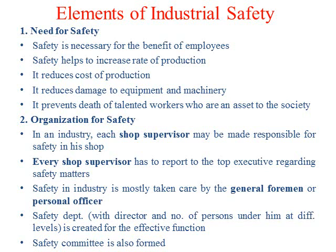The second element is organization for safety. Organization for safety basically means we need a person or a team in charge of safety purposes. Usually, shop supervisors are responsible for the safety of every foreman working there. We need a personnel officer for safety, a safety department. Some persons or a team should be there to ensure that safety policies are going on in a smooth manner. That is organization for safety — a safety team, a person or a team looking at all the safety measures.